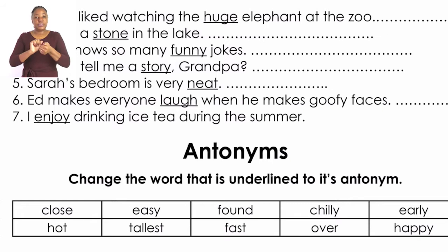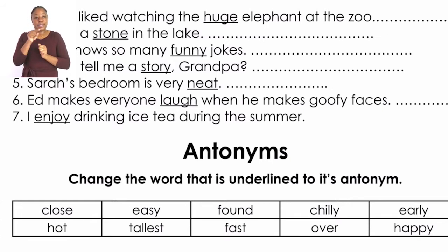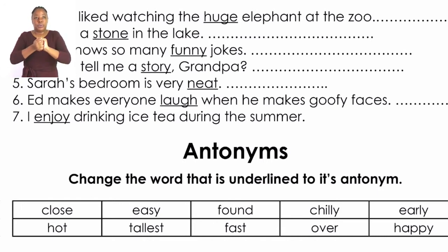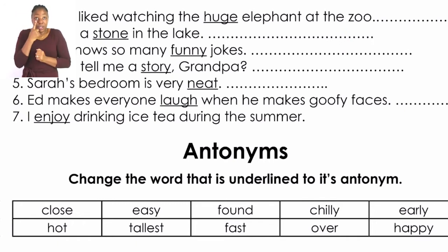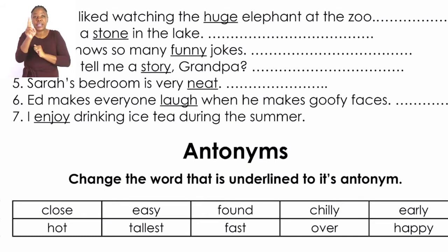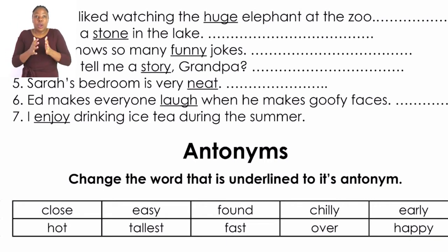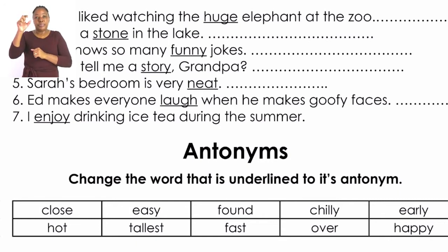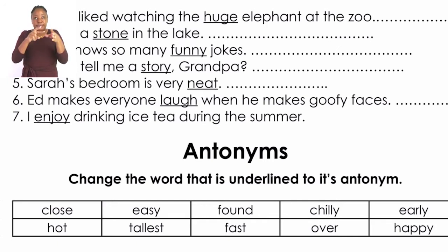Let's now turn to page 27 for our exercise. On page 27 you can see we are going to change those underlined words into synonyms. Let's look at number one. Number one says: 'Tommy liked watching the huge elephant at the zoo.' The word that is underlined is 'huge.' If you look at the synonyms, another word for 'huge' can be 'big' or 'large,' so you can write the word 'big.'